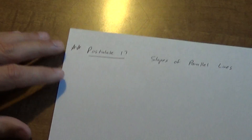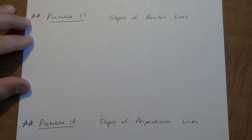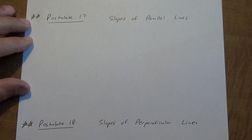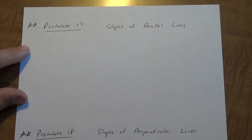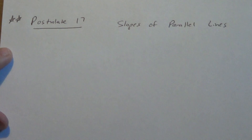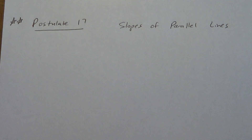There are two postulates you need to know. Postulate 17 talks about the slopes of parallel lines and Postulate 18 talks about the slopes of perpendicular lines. Let's focus on Postulate 17 first.